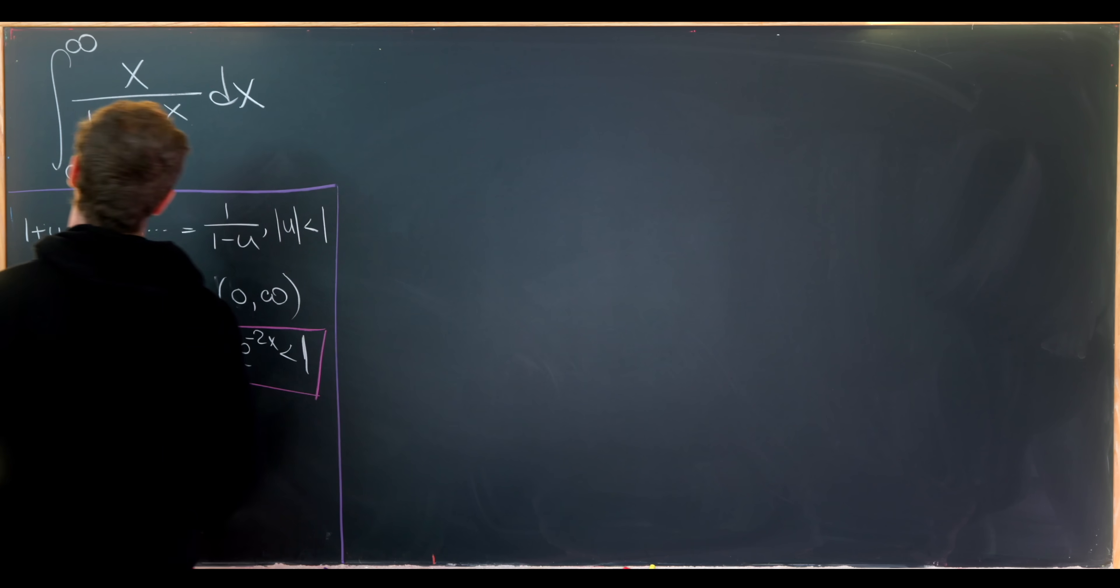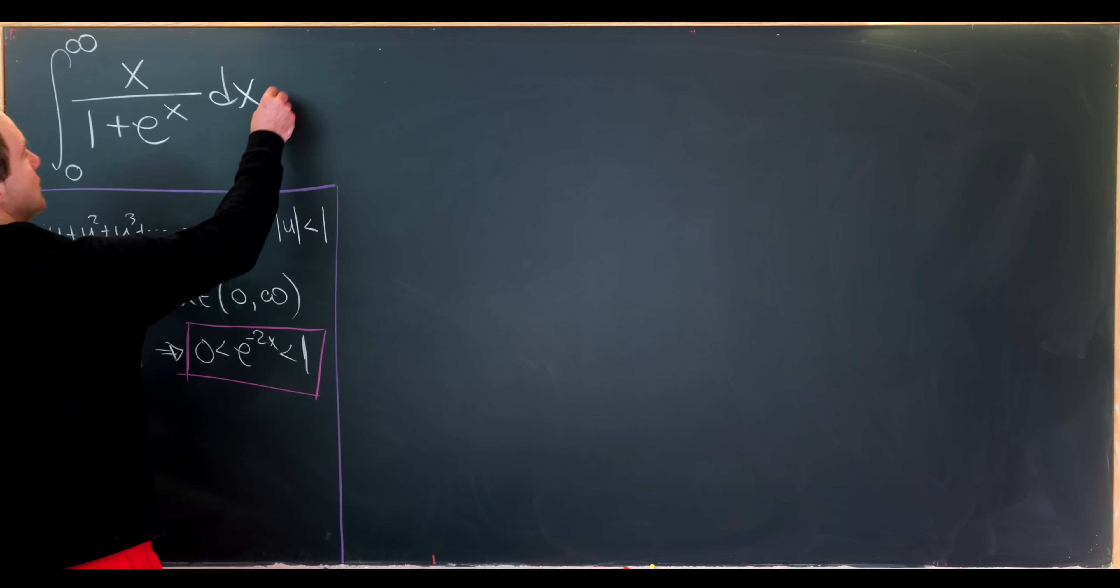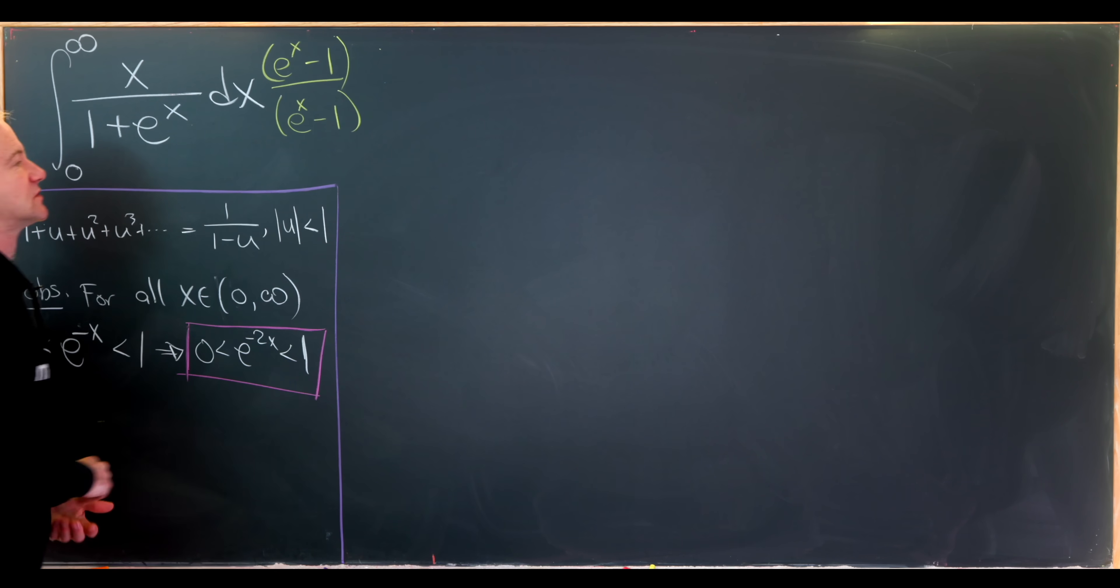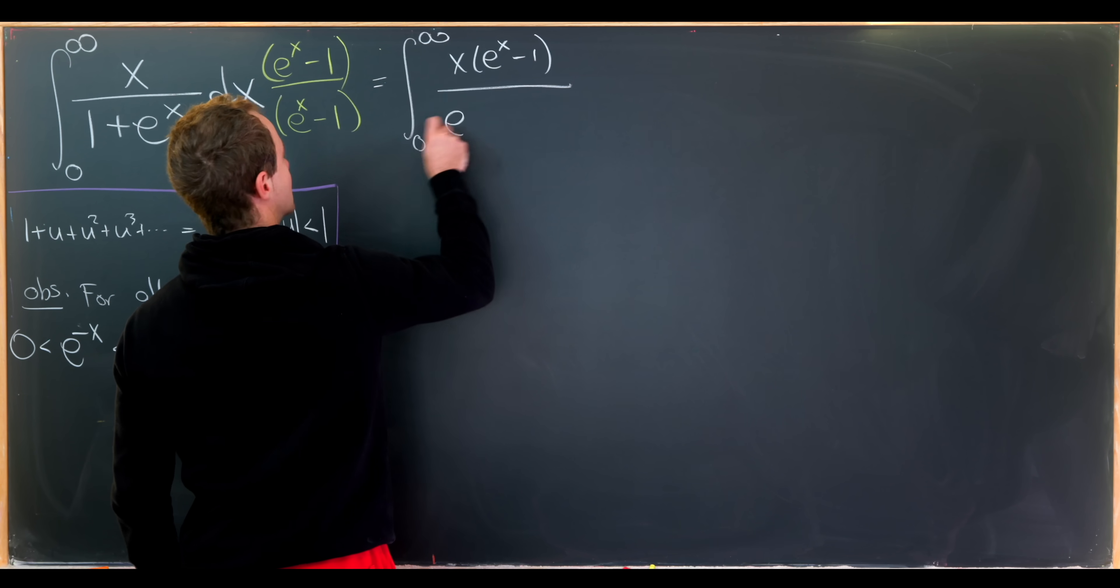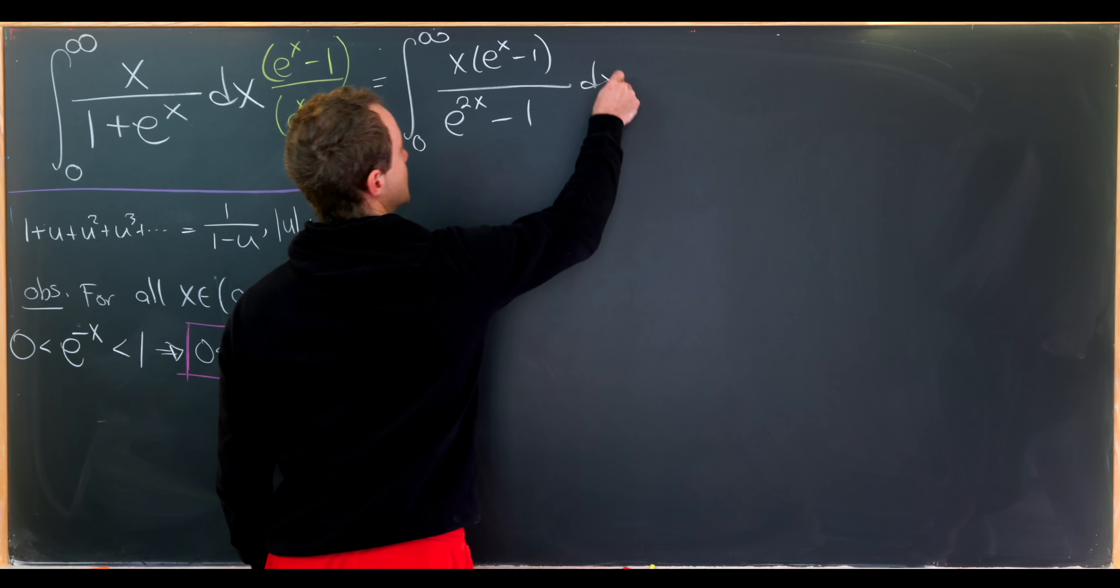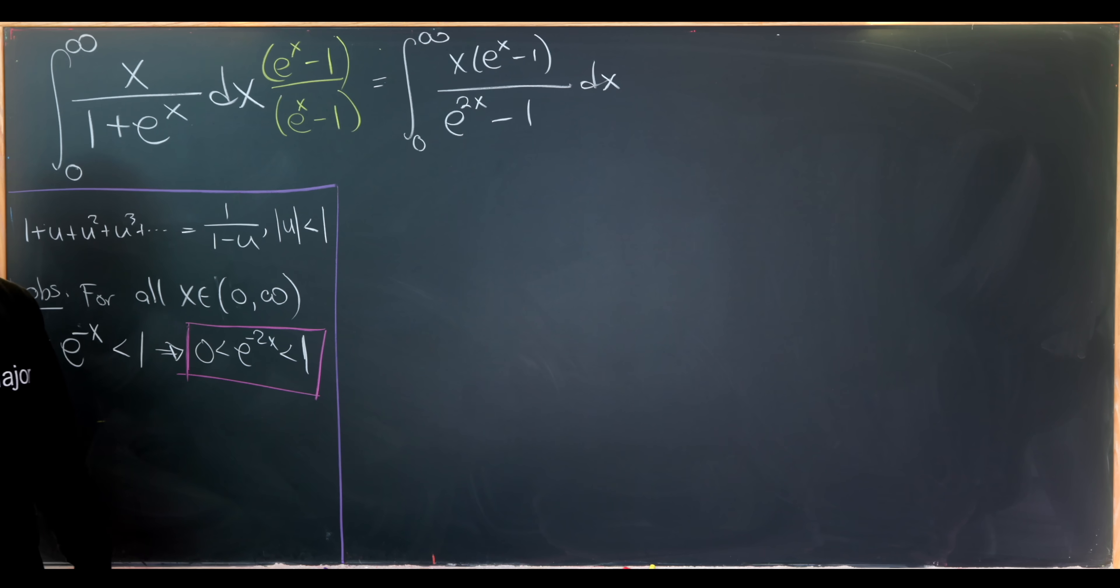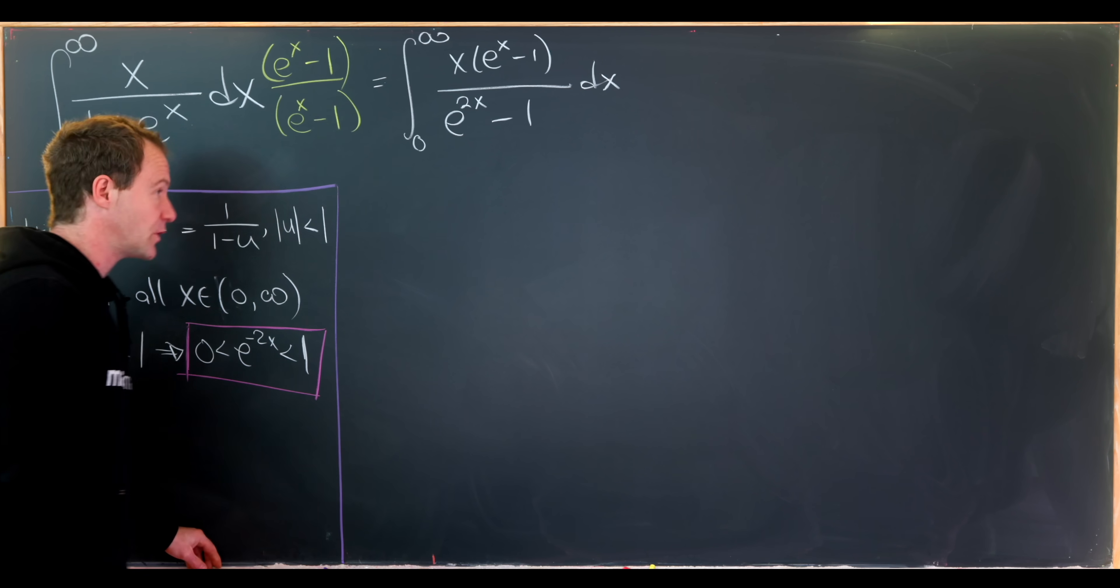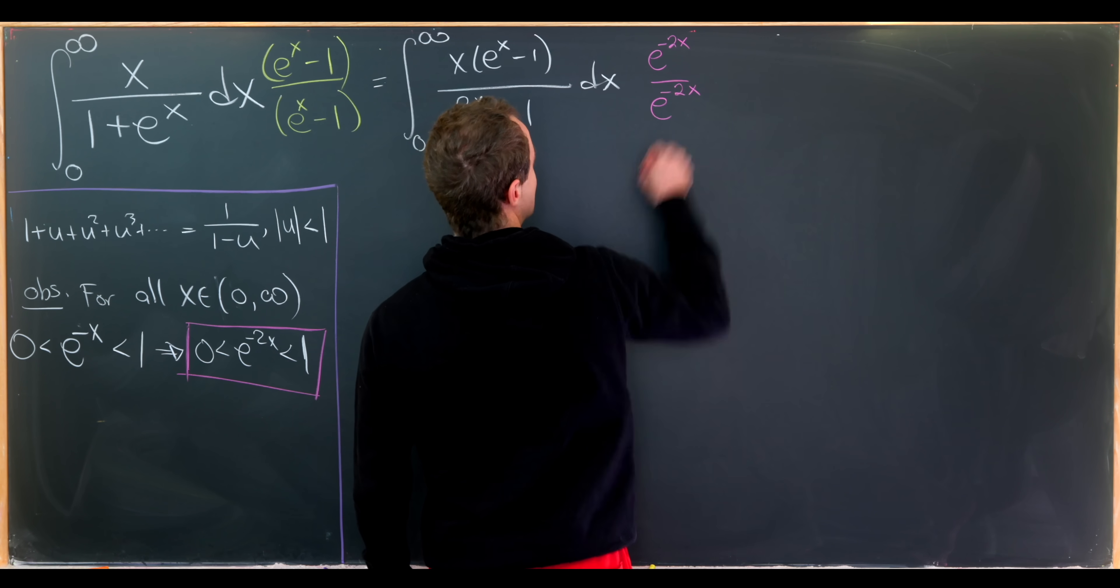So the first thing that I'll do is multiply by something that will make this denominator look like a difference of squares. In this case, it will be e to the x minus 1 over e to the x minus 1. So in the numerator, we'll have x times e to the x minus 1, and in the denominator, we'll have e to the 2x minus 1. But this is the same problem. We've got something that looks like a geometric series in the denominator again. But the common ratio at the moment looks a bit like e to the 2x, which is bigger than 1.